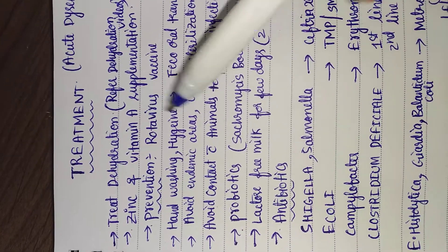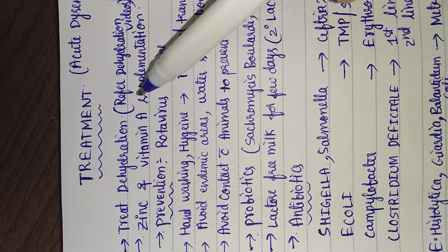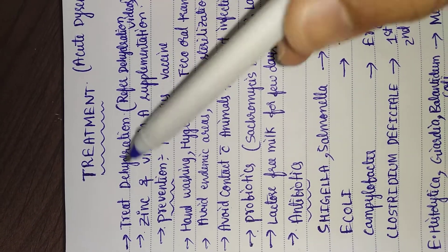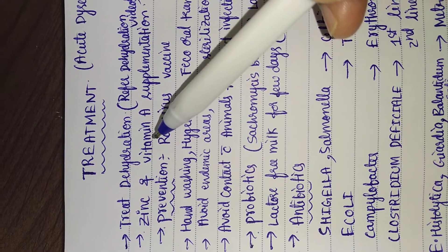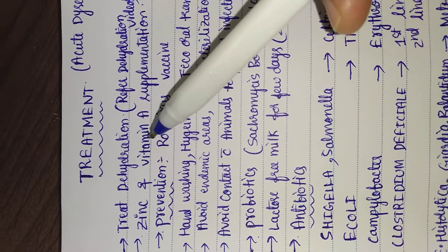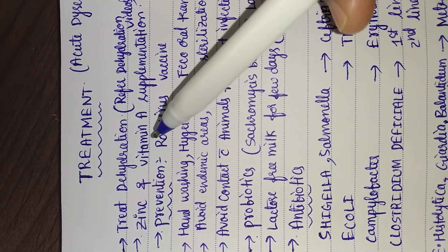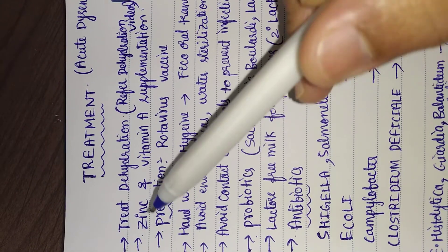Zinc and vitamin A supplementation should be given because these micronutrients will help in the epithelialization and healing of the intestines, leading to quick recovery of the diarrhea or dysentery. Zinc also helps in increasing immunity.